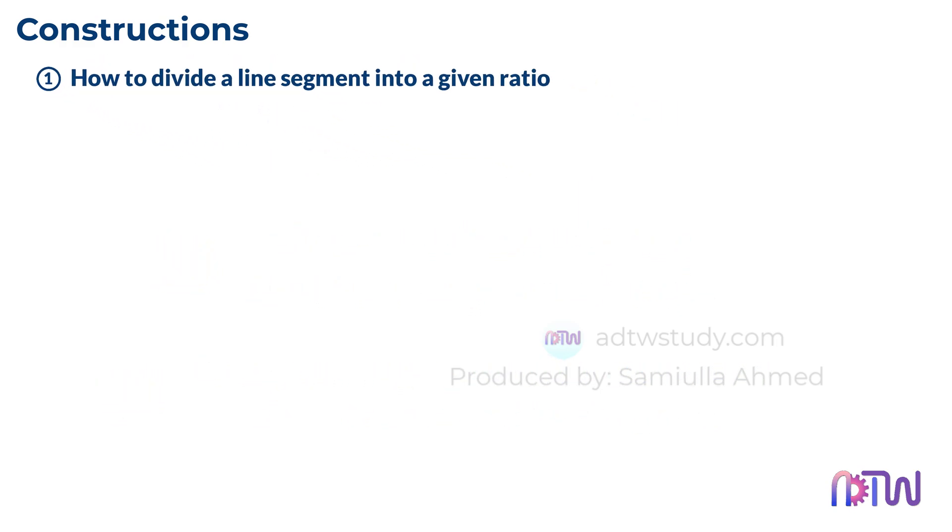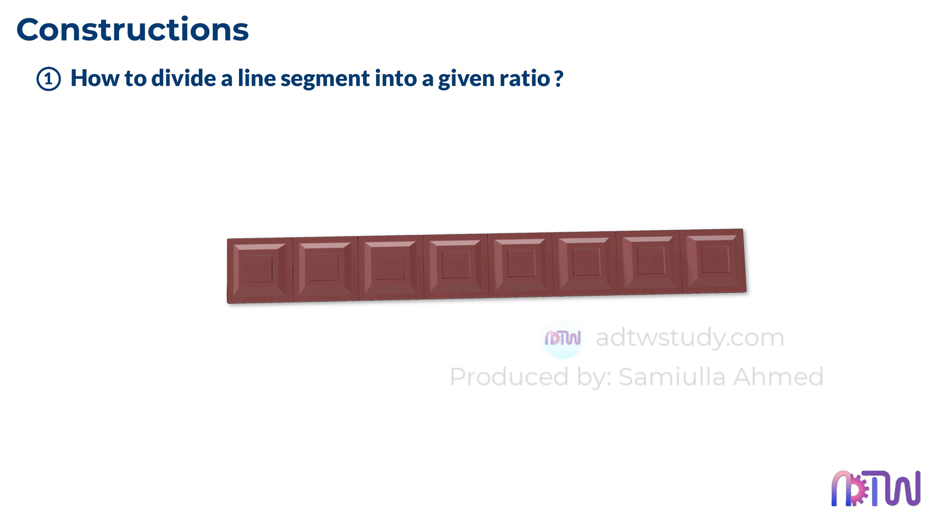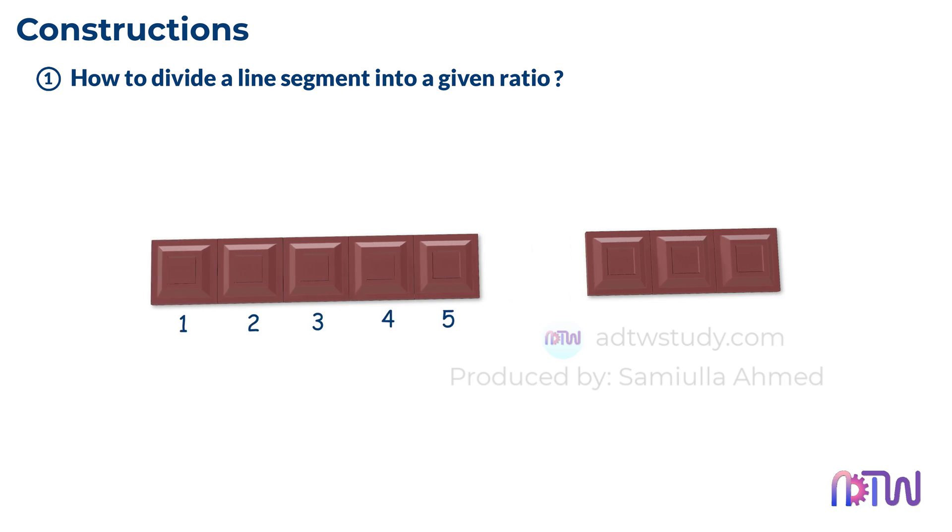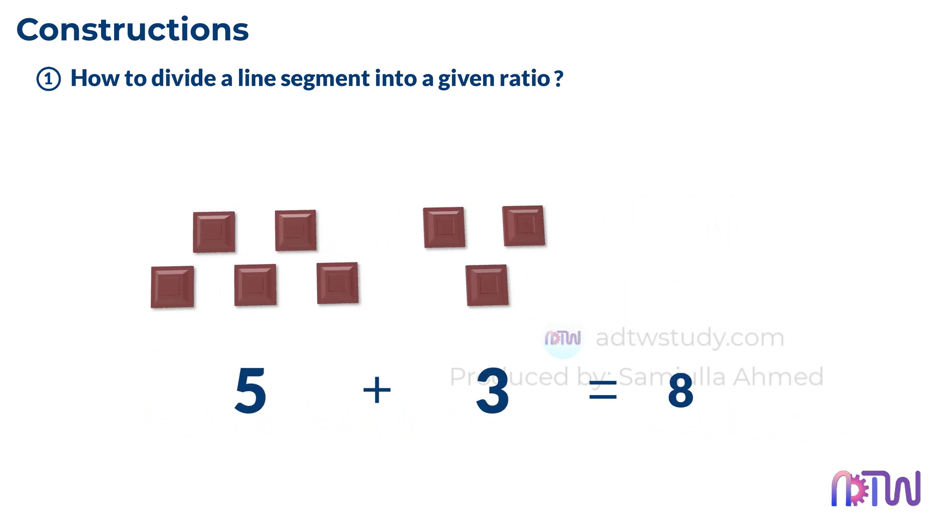How to divide a line segment into a given ratio. Imagine you have a chocolate bar and you want to share it between two friends. Instead of cutting it in half, you want to divide it so one friend gets a bit more than the other. Let's say one friend gets five pieces and the other friend gets three pieces. So in total there are 5 plus 3 equals 8 pieces of chocolate.